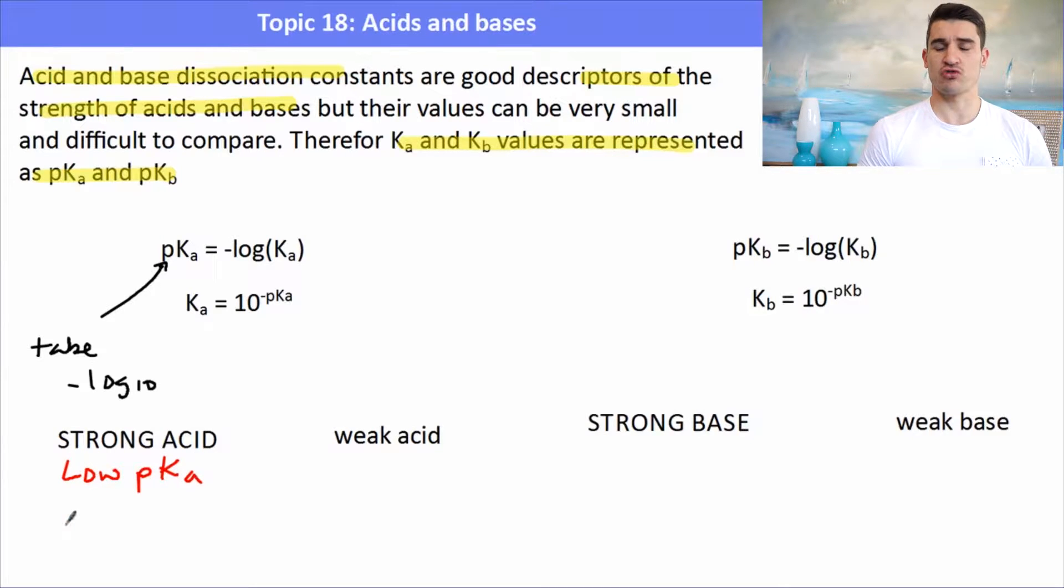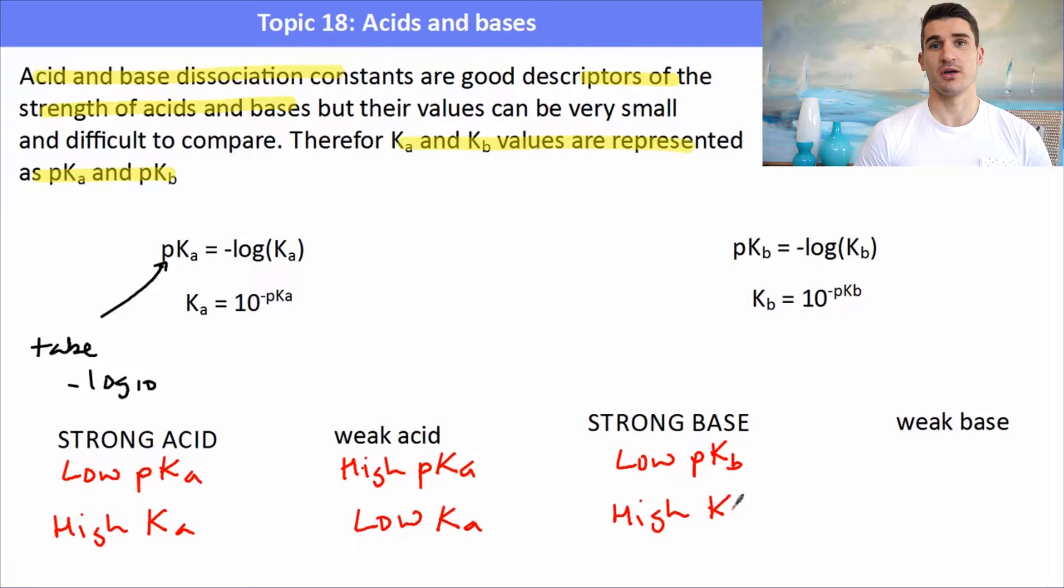Now if something is a strong acid it will have a low pKa. If something is a weak acid it will have a very high pKa, and because it's a log relationship that means that a weak acid would have a low Ka. A strong base will have a low pKb, very similar to the strong acids, so it would have a high Kb value. Sorry, a low Kb value. A weak base will have a high pKb value and will have a low Kb value. So they're kind of inverse to each other.